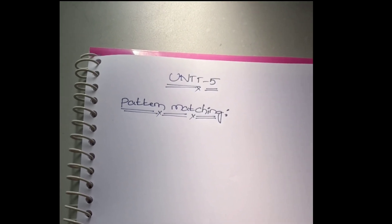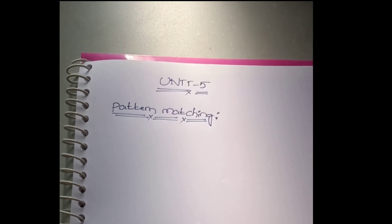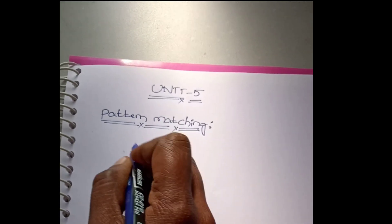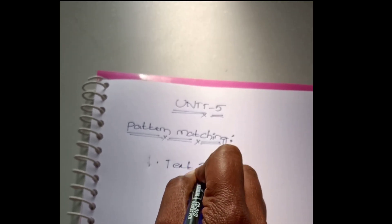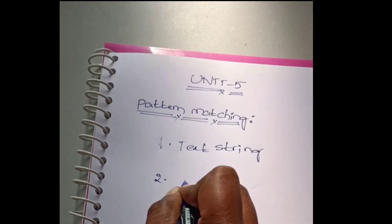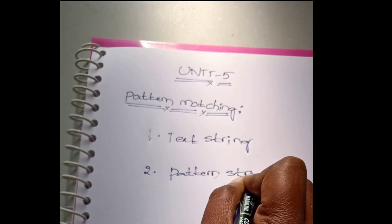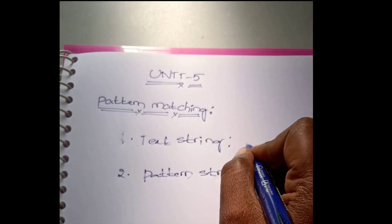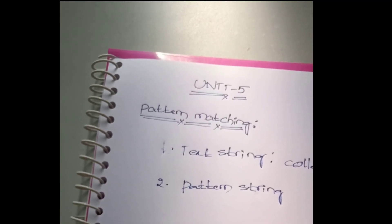I am going to explain the topic of pattern matching. In pattern matching there are two concepts: the first one is text string and the second is pattern string. A collection of characters is called a text string.